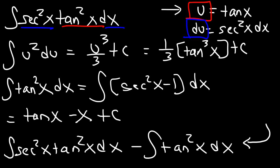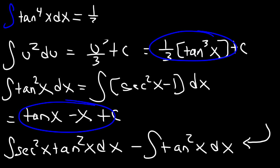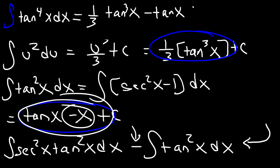So now we can write the final answer which will include these two. The integral of tangent to the fourth power is going to be one third tangent cubed, plus actually minus because we do have this negative sign. So it's minus tangent x, and then negative x times negative one, so that's going to be plus x, and then plus some generic constant c. So this is the final answer.